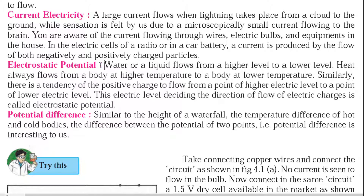What is electrostatic potential? We can understand it as potential energy. Potential energy is the energy stored in an object due to its position or state. For example, when we stretch a rubber band, we store potential energy in it. Similarly, water stored in a dam has potential energy — when water is at a high level, it has very high potential energy.